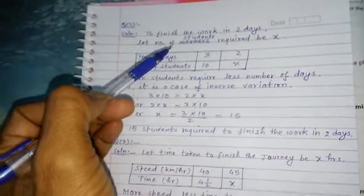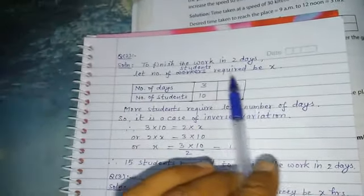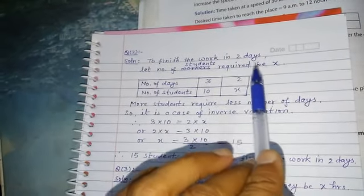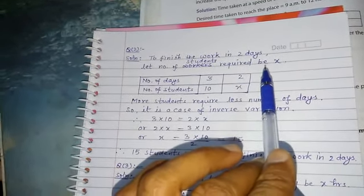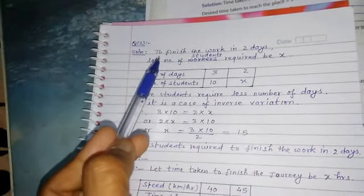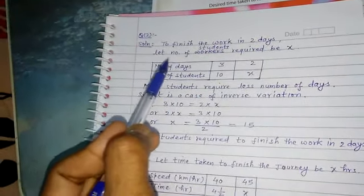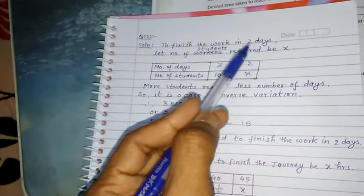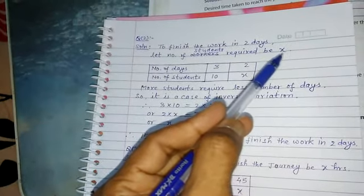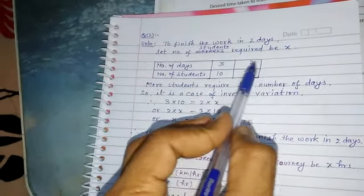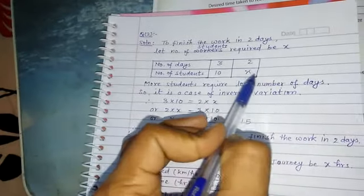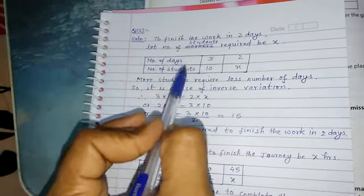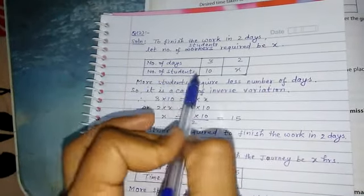Whatever is asked in the question, we assume that first. To finish the work in two days, let number of students required be x. So thus we have the table: number of days, number of students.